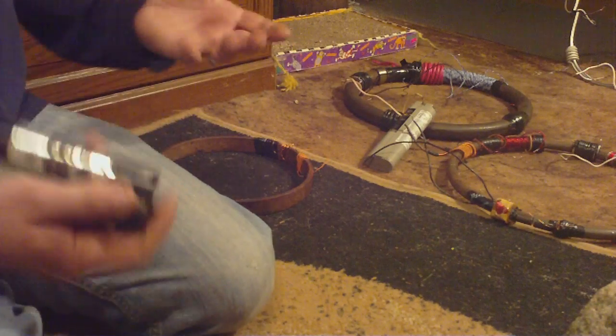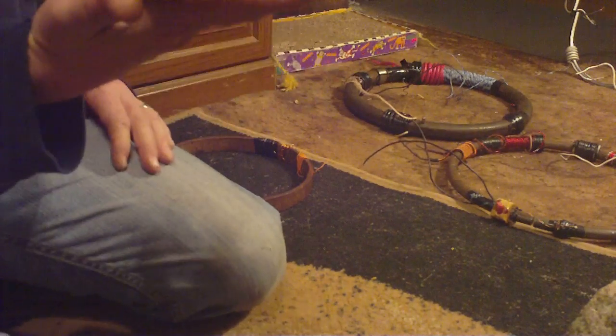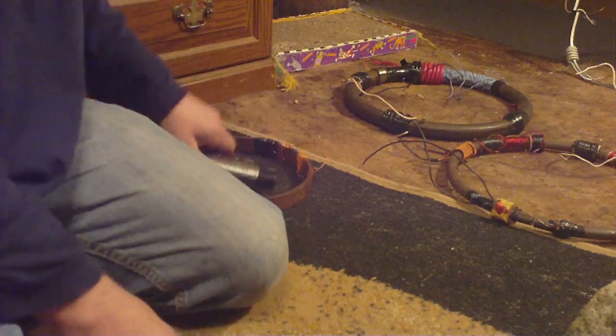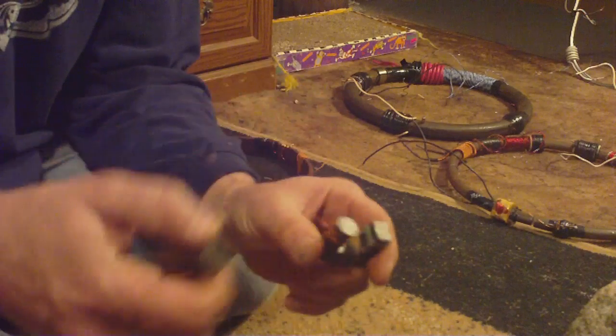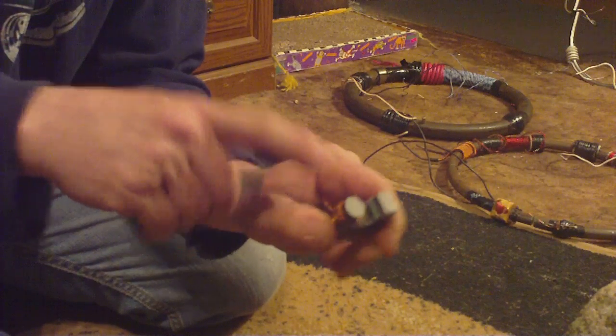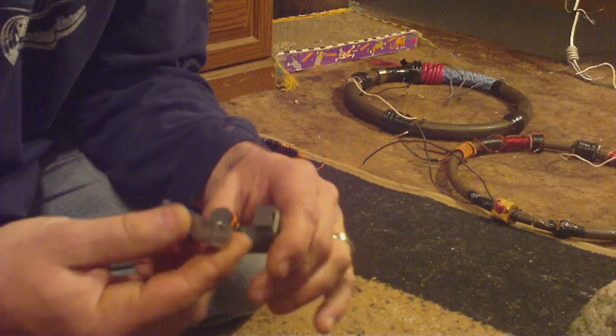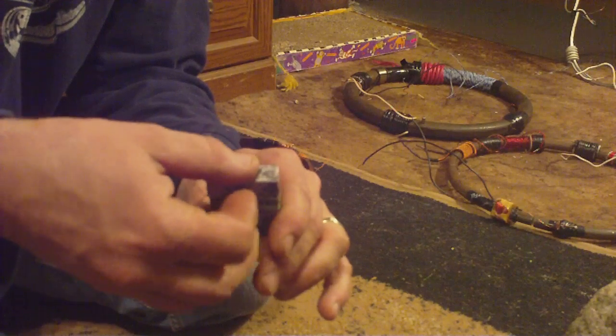And that's just a 9.6 volt Makita battery. The same battery that I'm going to use to energize this PMH right here. Ferrite and steel. And there's like three wraps of copper wire. Three. To energize it, to get it to lock, which is kind of amazing in itself.